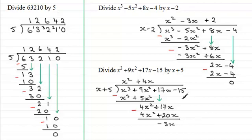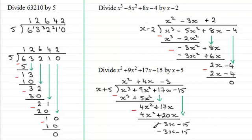We bring down the next term, which is minus 15. What do you multiply x by to get minus 3x? Well it's minus 3. Finishing this off: minus 3 times x plus 5 gives us minus 3x minus 15. Subtract to work out the remainder: minus 3x minus minus 3x is 0, and minus 15 minus minus 15 is 0. So there's no remainder, which tells us that x plus 5 is a factor of x cubed plus 9x squared plus 17x minus 15.